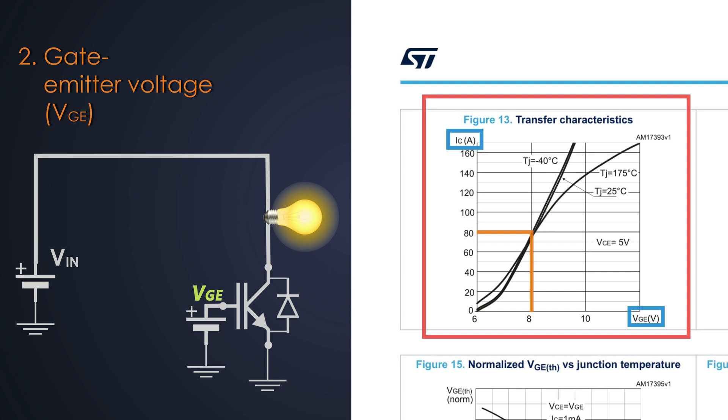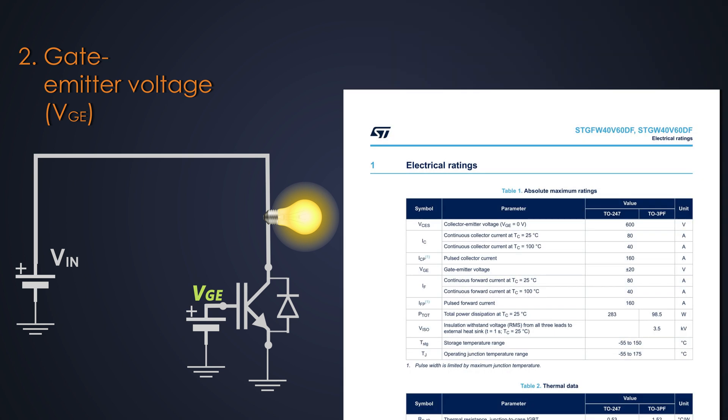Again, I am repeating, it is the theoretical relationship between gate to emitter voltage and drain current. In real-world driving application, we are supposed to provide more voltage than that. We can give gate voltage in the range of minus 20 volts to 20 volts to this IGBT to turn on or turn off. The more voltage we provide to the gate of the IGBT, the faster and more effectively it will turn on, and the more value of negative gate voltage will turn off the IGBT faster.